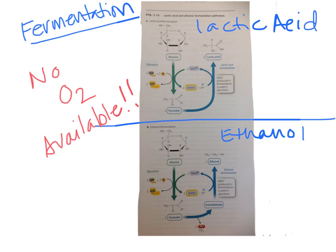Fermentation — what happens when no oxygen is available? In certain cell types like ours, we do lactic acid fermentation. Every cell does either lactic acid fermentation or ethanol fermentation; they don't have a choice. We take glucose, run through normal glycolysis, and make our two pyruvates.